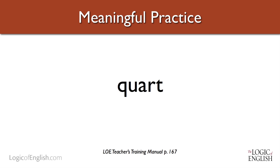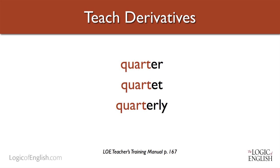Teaching roots is also important when teaching content. In an elementary school math classroom, many students struggle to remember how many quarts are in a gallon. But if we draw a connection: how many quarters are in a dollar? Four. When you cut something in quarters, how many pieces? Four. A quartet has four musicians. If you get something quarterly, you get it four times a year. Therefore, 'quart' means four, and there are four quarts in a gallon.